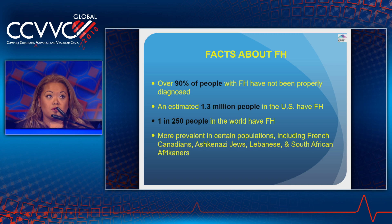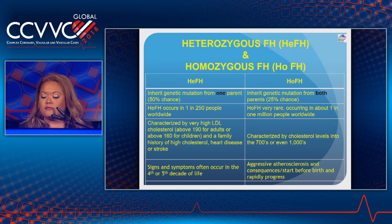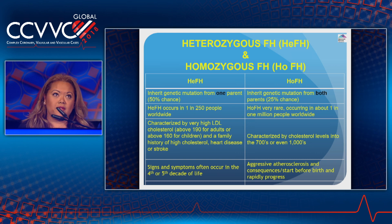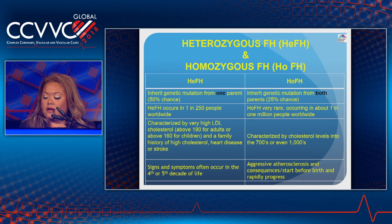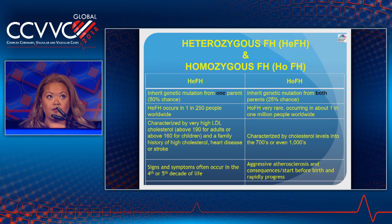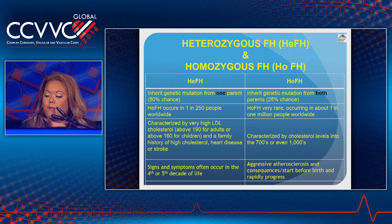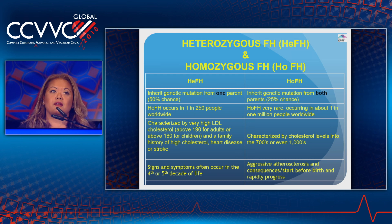One in 250 people have familial hypercholesterolemia worldwide, and it's more prevalent in certain populations including French Canadians, Ashkenazi Jews, Lebanese, and South African Afrikaners. There are two forms: the heterozygous type (HeFH) and the homozygous type (HoFH). In HeFH, the inherited gene mutation comes from one parent, occurring in one in 250 people, characterized by very high LDL-C with family history of high cholesterol, heart disease, or stroke, and signs typically occurring in the fourth or fifth decade of life. In HoFH, the mutation comes from both parents, is rarer at one in one million, with cholesterol levels in the 700s to 1000s. Atherosclerosis may begin before birth and progress rapidly.